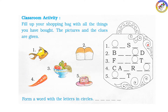If you look at the pictures, clues are given. First picture is fish - F.I.S.H. Next picture is bread - B.R.E.A.D. Third picture is fruit - F.R.U.I.T.S.